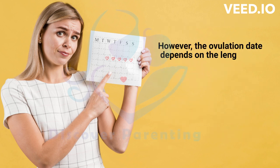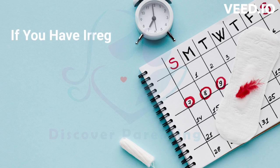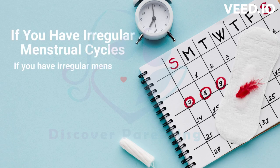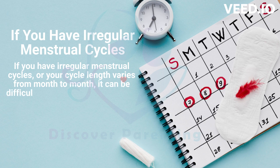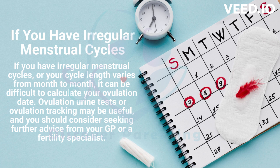However, the ovulation date depends on the length and regularity of your menstrual cycle, and it can be harder to tell when you're ovulating if your cycle varies from month to month. If you have irregular menstrual cycles, or your cycle length varies from month to month, it can be difficult to calculate your ovulation date. Ovulation urine tests or ovulation tracking may be useful, and you should consider seeking further advice from your GP or a fertility specialist.